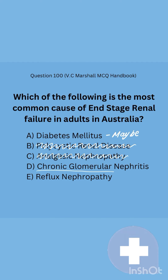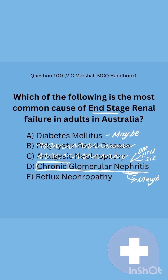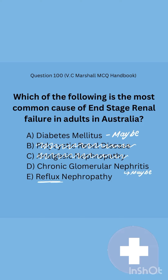Option D is chronic glomerular nephritis. The word 'chronic' is a clue that it's been going on for a long time, which fits with end-stage renal failure. Glomerular nephritis is a clear cause of end-stage renal disease with multiple systemic conditions contributing to its pathology. It's also a broad term that technically includes diabetic nephropathy, hypertensive renal disease, and other autoimmune conditions. So this should definitely be a 'maybe.'